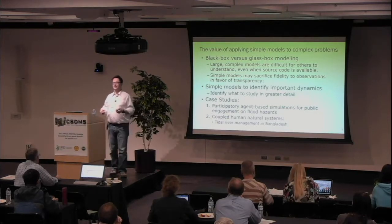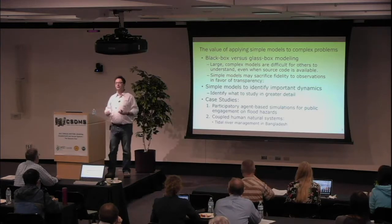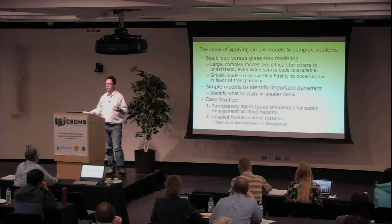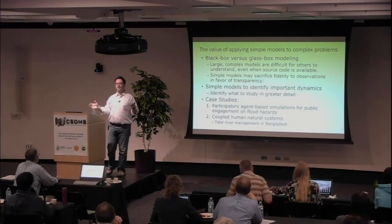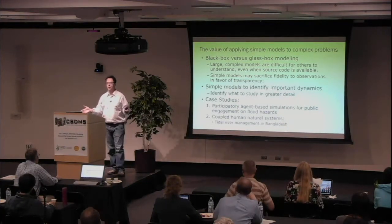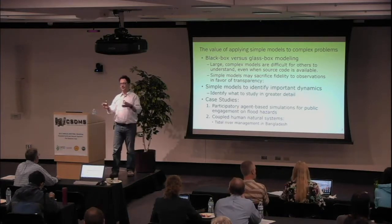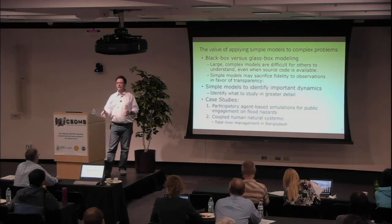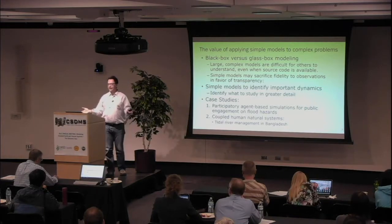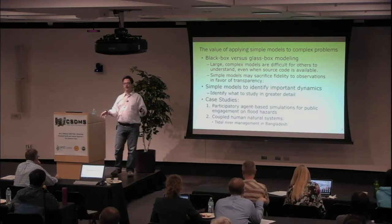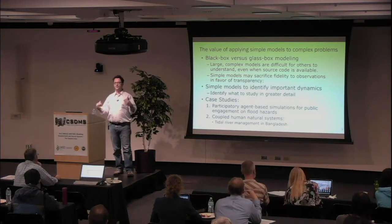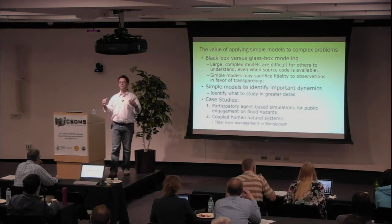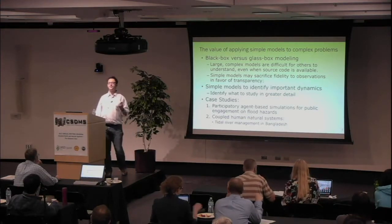I'd like to talk about the value of applying simple models to complex problems. I spend a lot of time thinking about models as a way of communicating about what we know. There's a continuum between black box and glass box models. Large complex models give incredibly faithful representation of the world but are really hard to understand, even if the code is open. Simple models let you trade off some fidelity but gain simplicity — you can see the assumptions, question and change them, and communicate to stakeholders and policymakers.